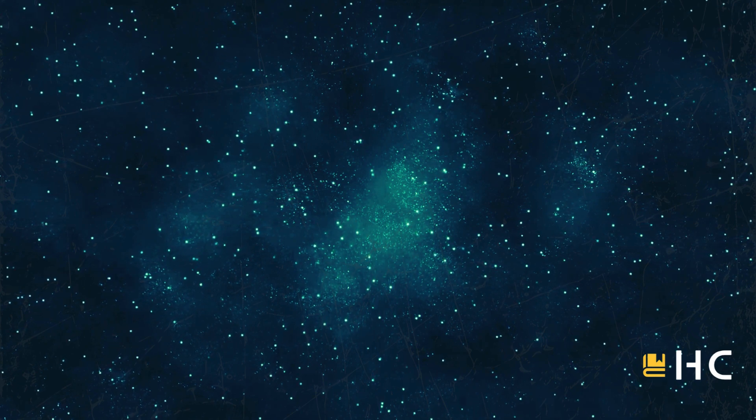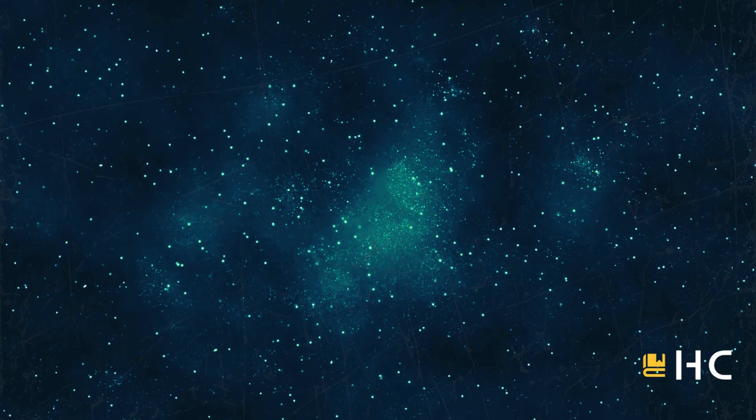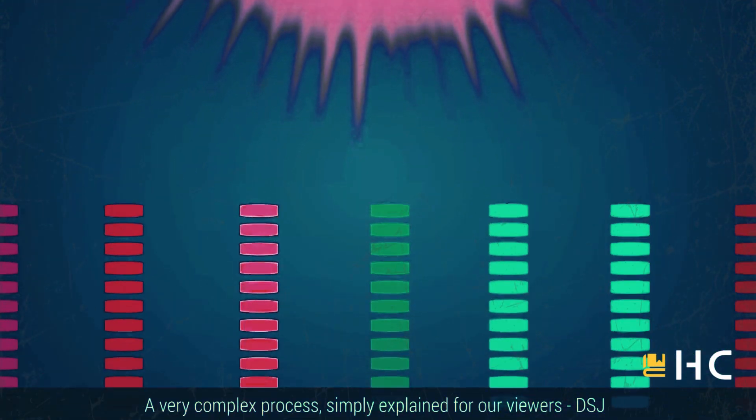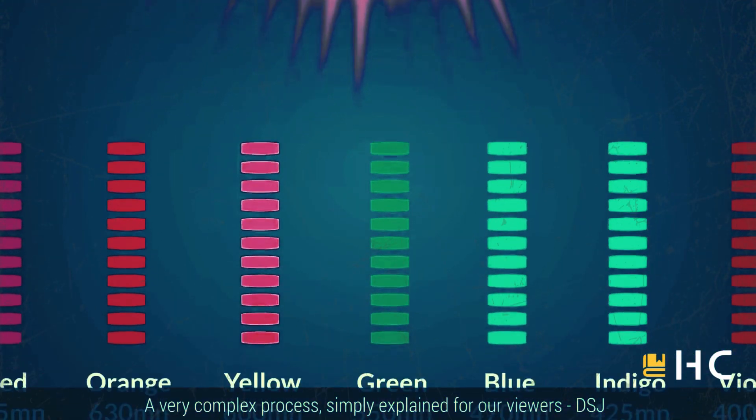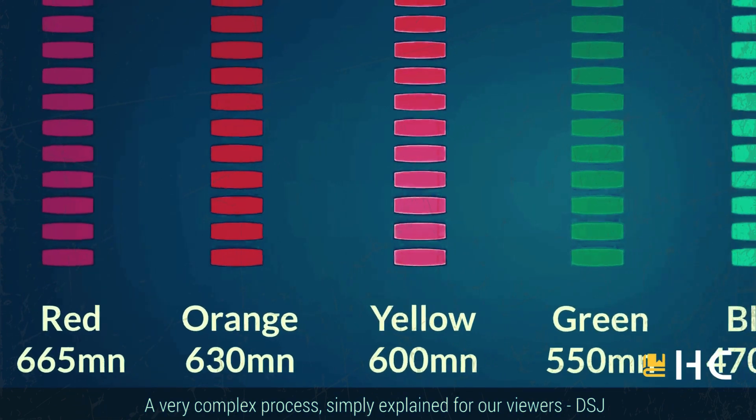Then why does the sky appear as blue from the Earth? Before learning it, you must know that sunlight consists of seven colors. The difference of these colors is in fact the difference of their wavelength. The red has the maximum wavelength, while the blue and violet have the minimum.